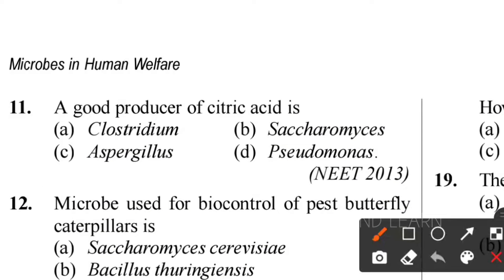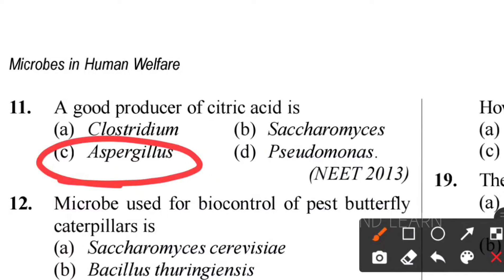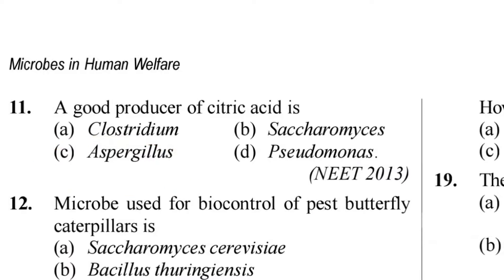Eleventh question: a good producer of citric acid is which microorganism? The answer is Aspergillus niger - it produces the best yield of citric acid. Clostridium produces butyric acid, Saccharomyces produces ethanol, and Pseudomonas produces alkaline protease. So Aspergillus niger is the correct answer.